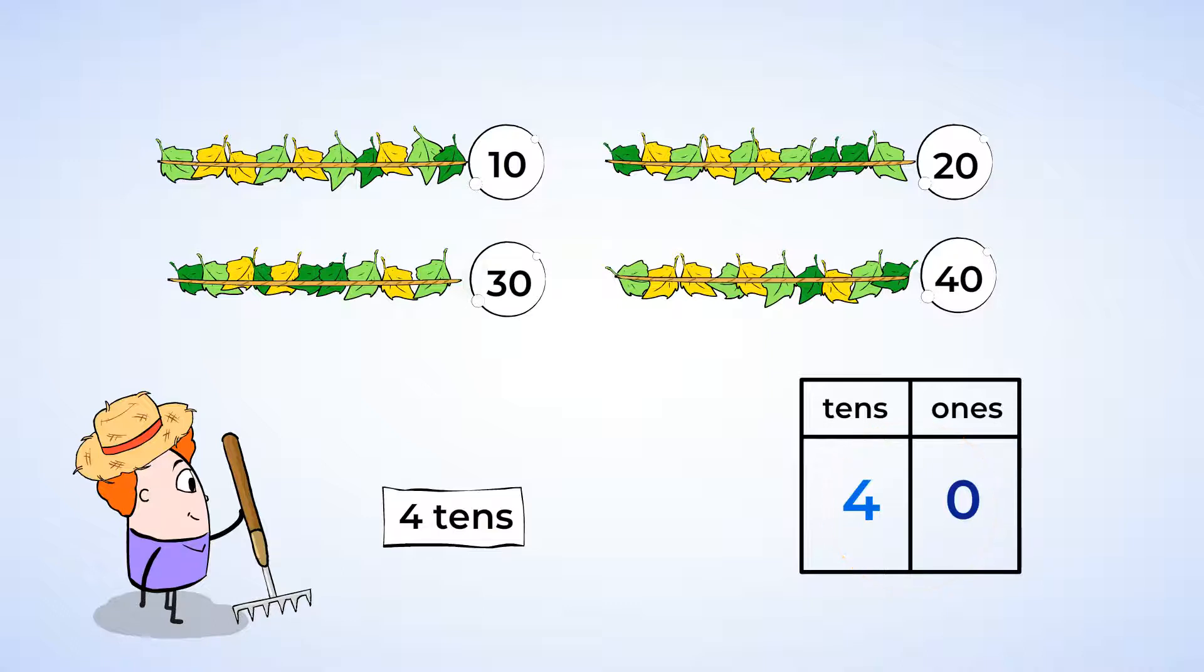Uh-oh. Look. 3 more leaves just fell off the tree. But these 3 extra leaves are not enough to make another group of 10. So we call them 1s. 1, 2, 3. There are 3 1s. In the place value chart, we'll write 4 10s and 3 1s. And now, there are 43 leaves. And before any more leaves fall, let's head over to the pond.